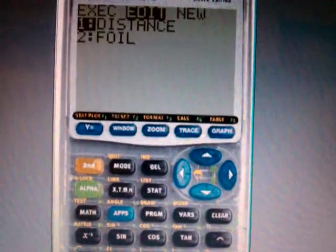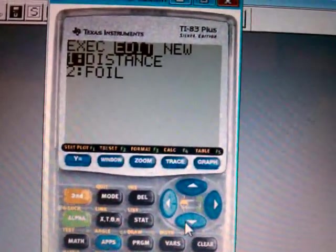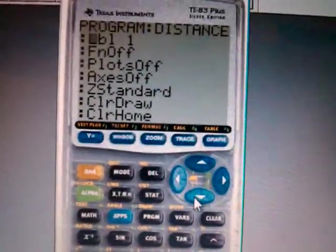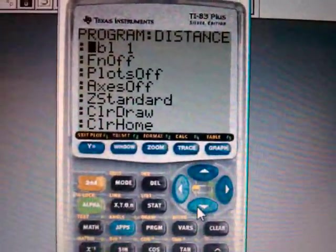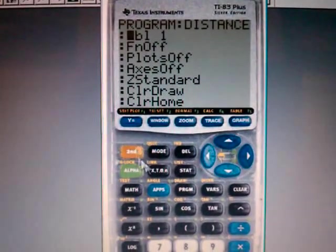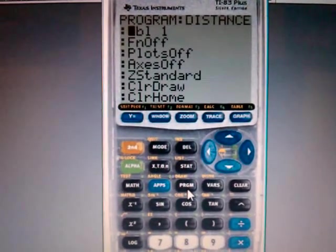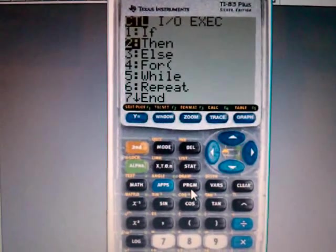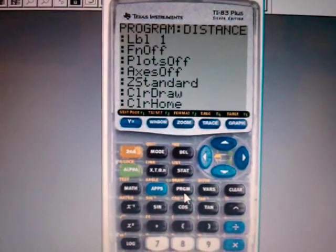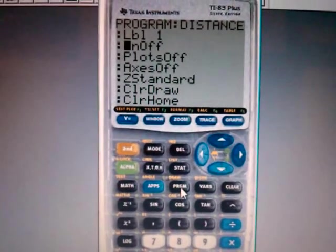So I'm going to go over two programs right now. The first one I'm going to give you is Distance, and I'm going into Edit to show you what it looks like. First thing I have here is a label. To define a label, you hit Program, and it's number 9, which should be Label. Hit enter.